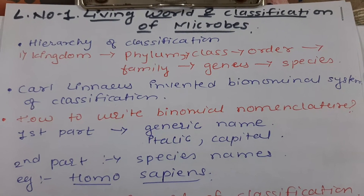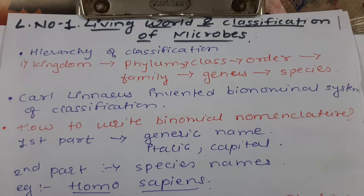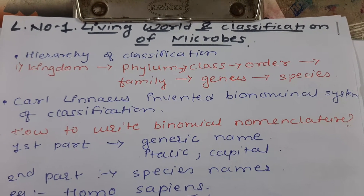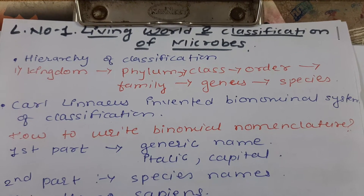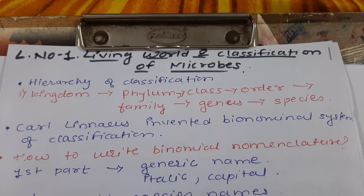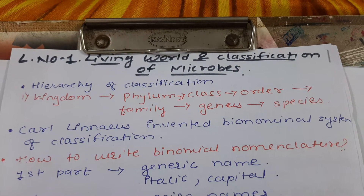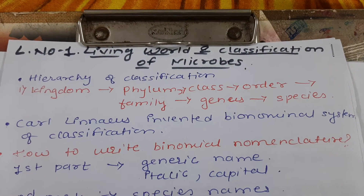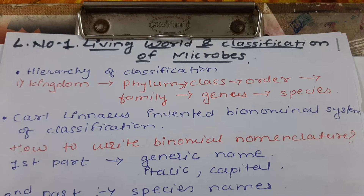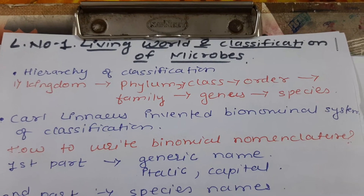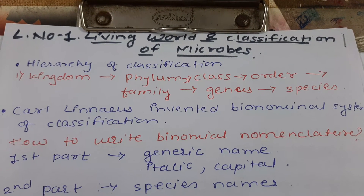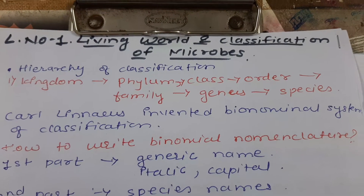Good morning students. Today we are going to learn about the living world and classification of microbes. The living world is the world surrounding us — the world which makes up plants, animals, insects, small microbes, etc. Classification of microbes means dividing the microbes or microorganisms into small groups.